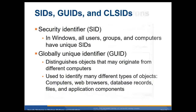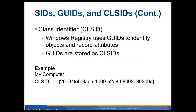SIDs, GUIDs, and CLSIDs — security identifiers in Windows: all users, groups, and computers have unique SIDs. If you delete a user and bring them back, they will have a completely different SID and you have to reconstruct their permissions, so it's often recommended to disable the account for a period of time rather than delete it. Global unique identifiers distinguish objects that may originate from different computers in a domain or adjacent domain with trust. They're used to identify computers, web browsers, databases, files, and application components. Class identifiers — the Windows registry uses GUIDs to identify objects and record attributes. GUIDs are stored in the class identifier; for example, to open My Computer, here's a class identifier — a 128-bit hexadecimal number. You could actually type that in and it should trigger it to open My Computer.